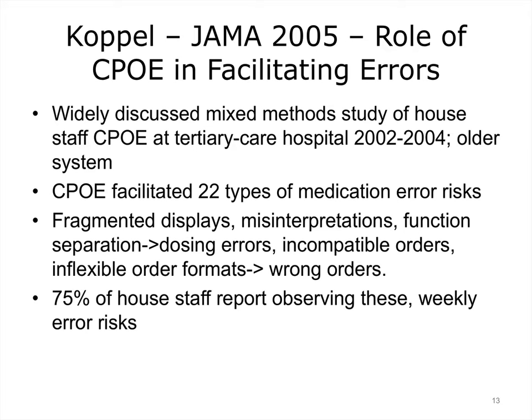Koppel's JAMA 2005 paper on how CPOE could facilitate errors was widely discussed. It concerned an older system at a tertiary care hospital. He found it could facilitate 22 types of medication error risks. The reasons included fragmented displays, misinterpretations, function separation, incompatible orders, and inflexible order formats, which led to wrong orders. He interviewed 90% of staff, and 75% of house staff reported observing these types of error risks weekly.